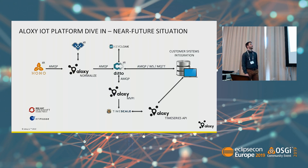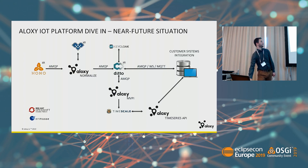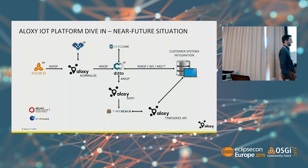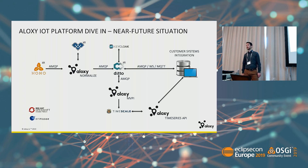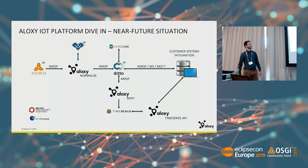We are currently working on incorporating Vorto as well. In the future architecture, Vorto comes into the picture. We would also like to have a time series API, because currently we're using Grafana just to visualize all data, but we also want to give the customer the possibility to call an API to get historical data — right now they just have a Grafana dashboard. Between HONO and Ditto, we would like to have a normalizer that uses Vorto, and the rest of the architecture remains largely the same.